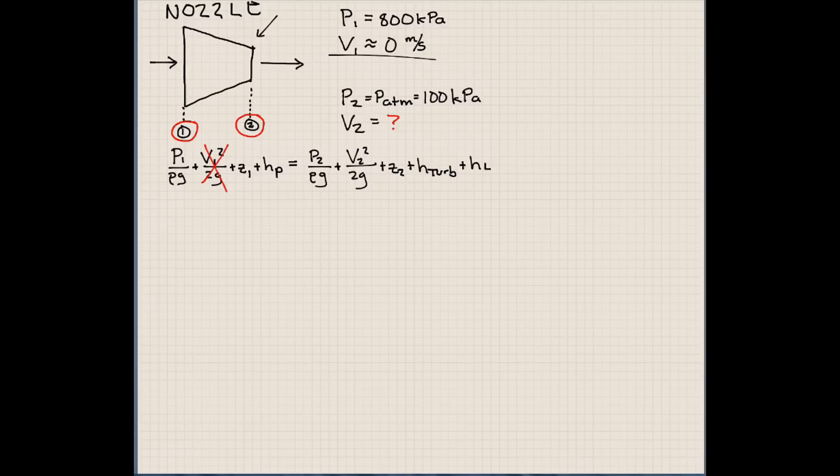So here we know that velocity at point 1 is about 0. We know that the height difference between points 1 and 2 is 0, so there's no potential energy change between the two points. We don't have a pump in our line between points 1 and 2, so we'll cancel this.